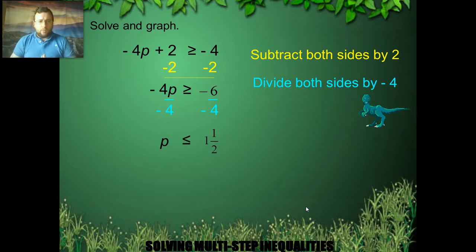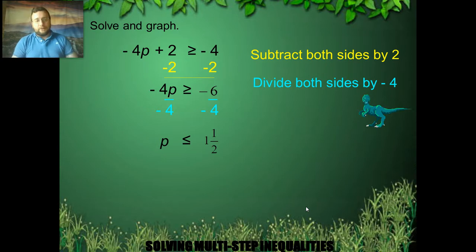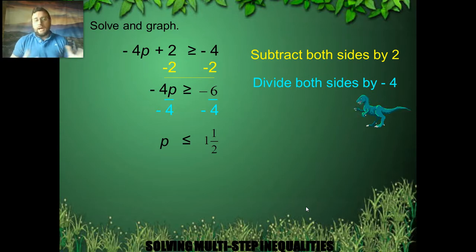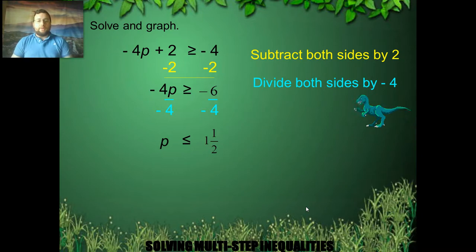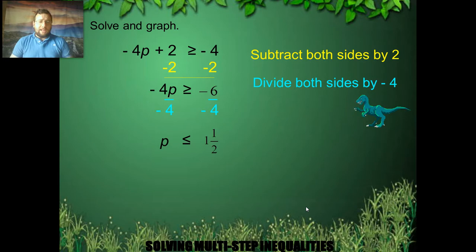So instead of bigger than or equal, I get smaller than or equal. This shows that when you subtract, you do not change the sign. But when you divide or multiply both sides by a negative, you must change the orientation of the sign.